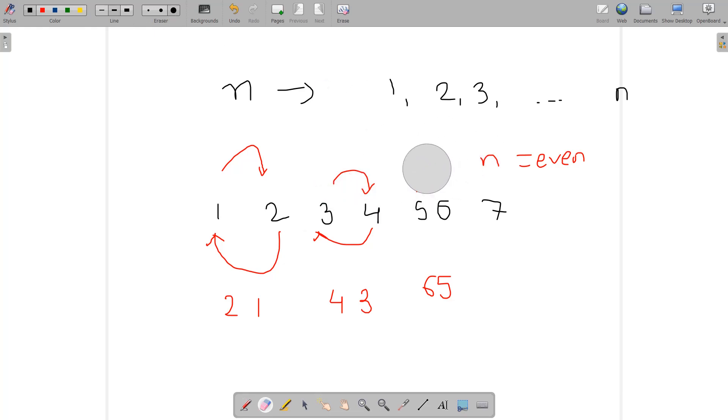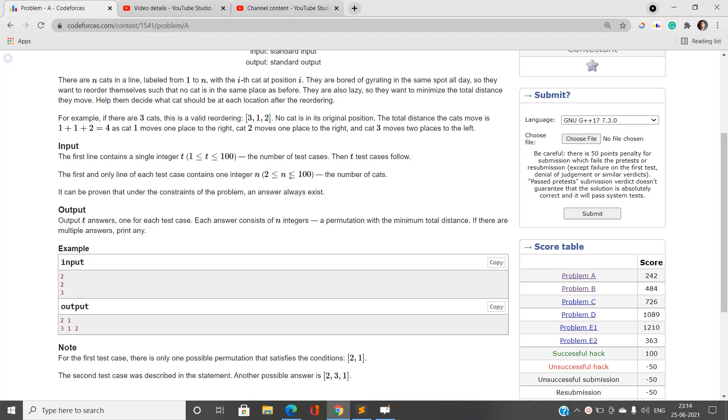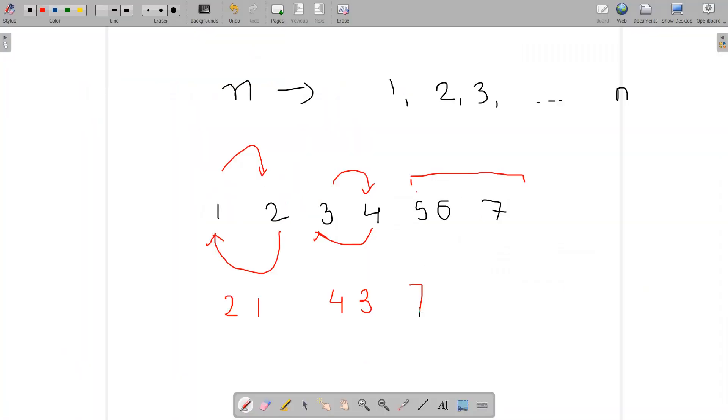Our aim is to provide a certain permutation such that the previous one and the current one should not be matching, and for every number you want to reorder themselves so that no cat is in the same place as before. So for the new position - I will put this 7, and I will put this 5, and I will put this 6. You can see this is going to be optimal: you give 2 distance to 7, 1 distance to 5, and 1 distance to 6. This is going to be optimal and this is the correct way to provide the minimum distance.